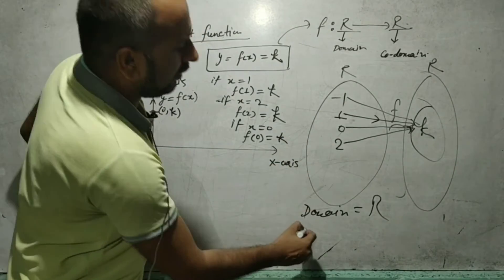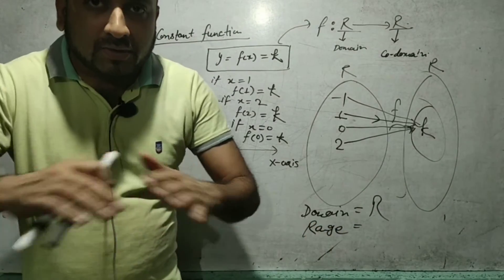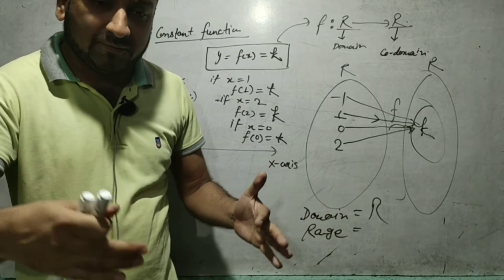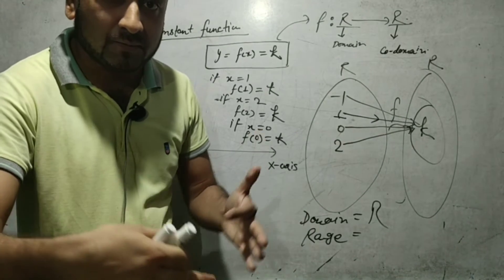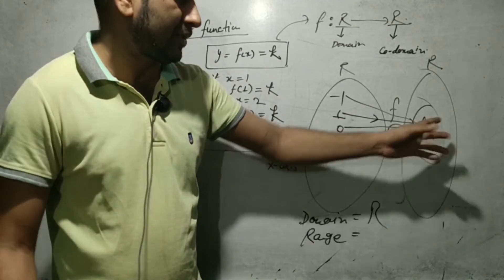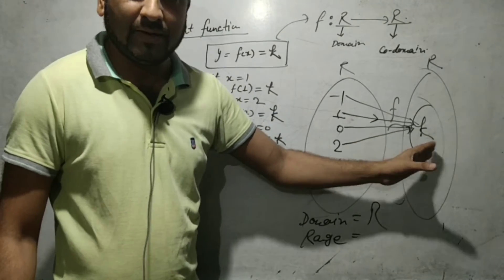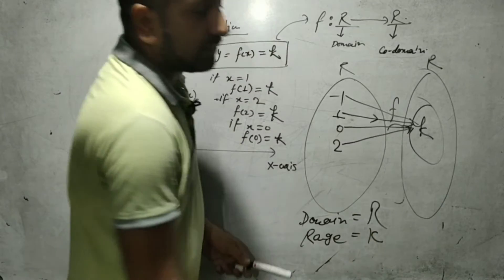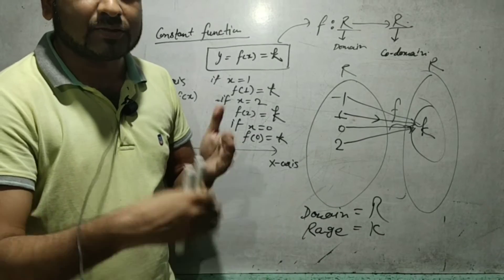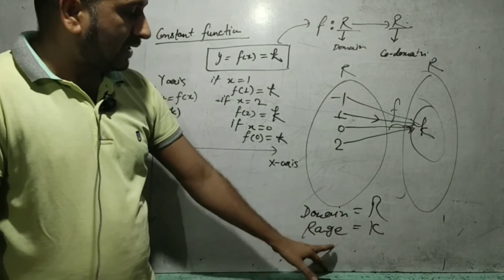Now let's discuss the range. For all values of x at which the function is defined, the value of f(x) is always k. So the set of values of f(x) — which is the range — is {k}. The domain is the real numbers and the range is {k}.